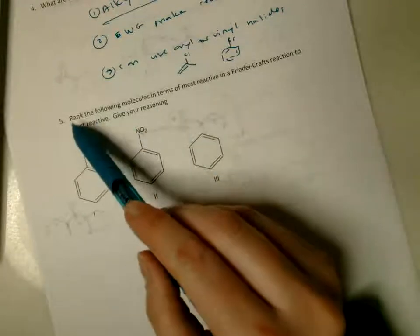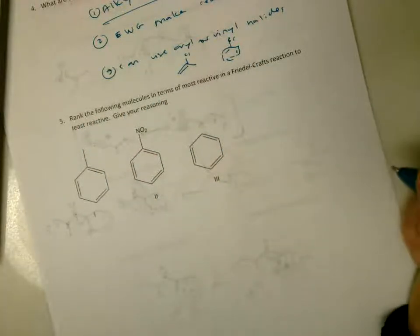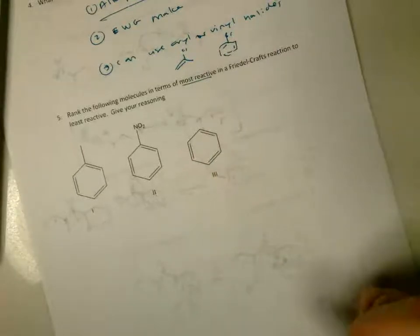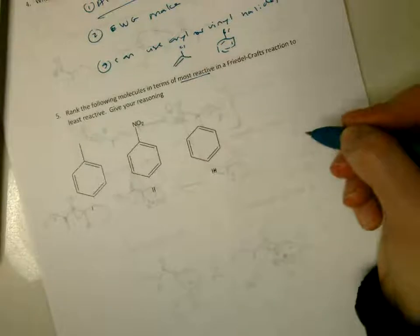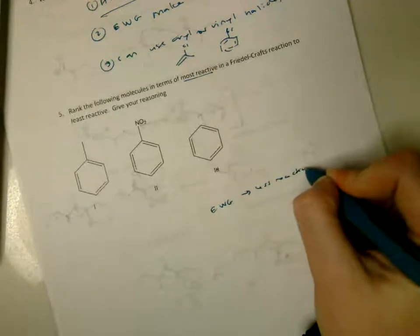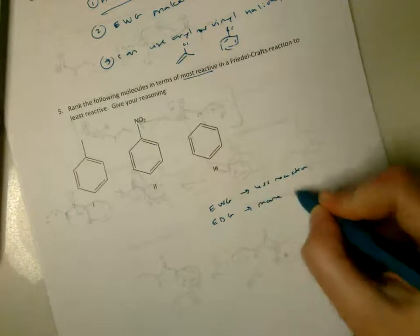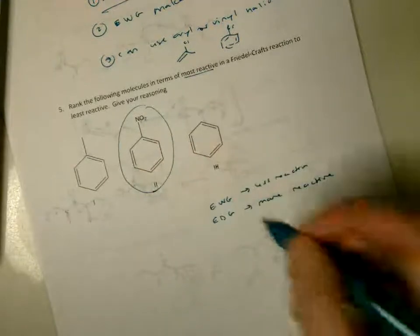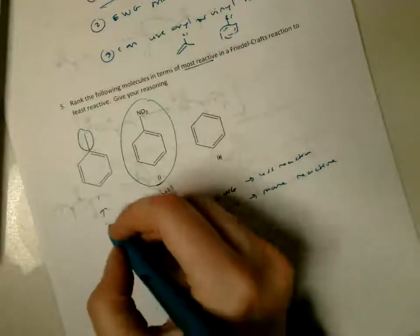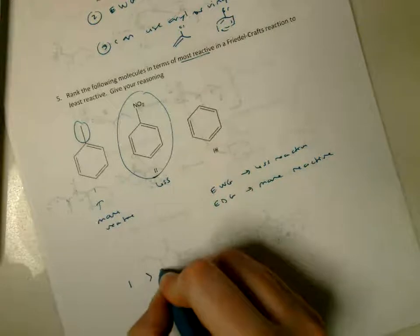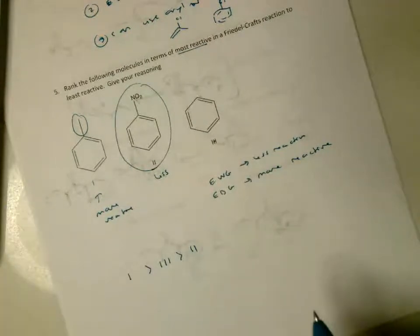Question five: rank the following molecules from most reactive to least reactive in a Friedel-Crafts reaction. I use benzene as my benchmark. An electron-withdrawing group makes it less reactive; an electron-donating group makes it more reactive. So the molecule with an electron-donating group is most reactive, plain benzene is in the middle, and the one with a nitro group — an electron-withdrawing group — is least reactive.